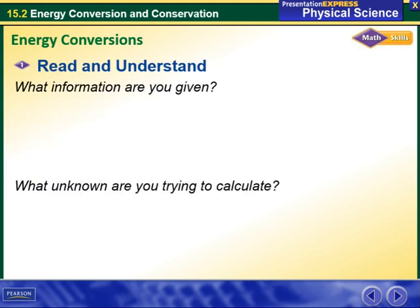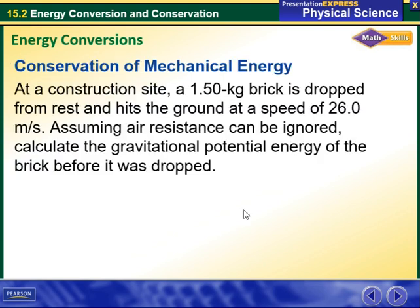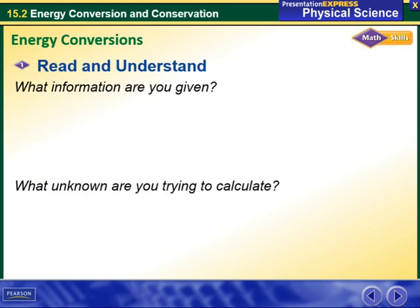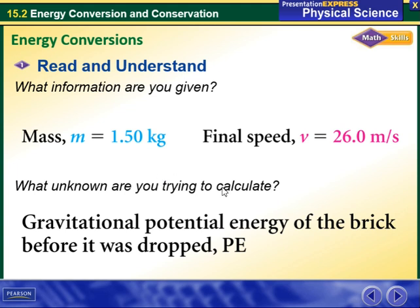First, we are going to analyze the question and understand the given information. The given information in this example is the mass, which is 1.5 kilograms, and the speed, which is 26 meters per second. What is unknown and what I have to find is the gravitational potential energy of the brick before it was dropped. The gravitational potential energy is abbreviated as PE.